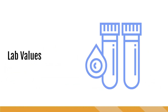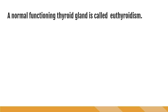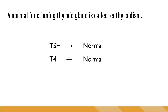To better understand how the thyroid is functioning, blood tests can be done for levels of TSH, T3, and T4. A normal functioning thyroid gland is called euthyroidism. In a normally functioning thyroid, all blood work will come back normal — TSH, T4, and T3 will be in the normal functioning range.